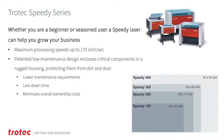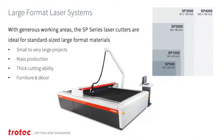The Trotec Speedy Series is the most common system used in the wood industry, whether you're a beginner or seasoned veteran. Processing speeds reach up to 170 inches per second. A patented low-maintenance design encloses critical components in rugged housing, protecting from dust and dirt to minimize downtime and overall cost. The Speedy Series comes in four models: the Speedy 100 (12x24"), Speedy 300 (29x17"), Speedy 360 (32x20"), and Speedy 400 (40x24").